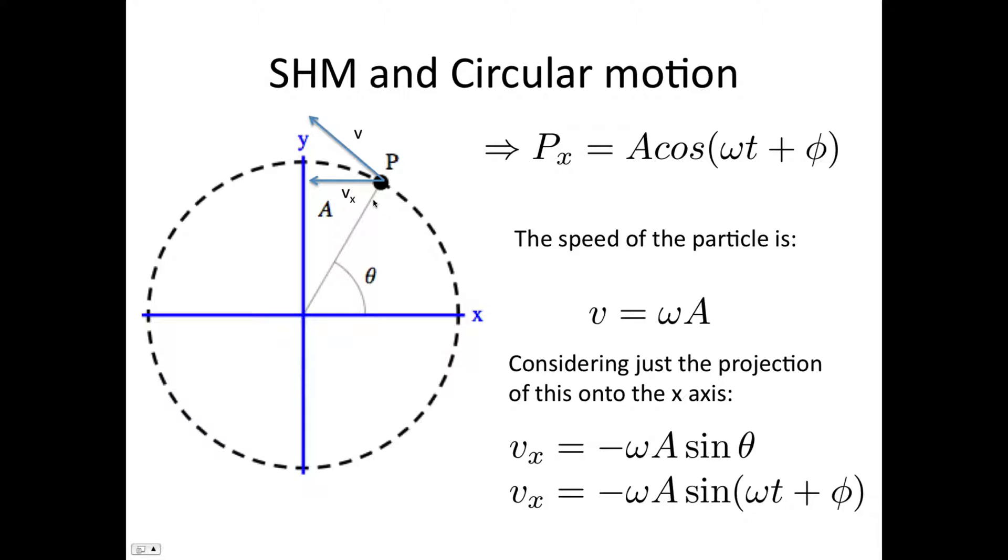Now we're just interested in the x component of this speed. You can see it's back towards the equilibrium position, so it's in the opposite direction to the position. Hence, we've got a negative sign. So the speed, here's the angle theta. This angle here is theta. This angle is 90 minus theta. So the speed is given by v sine theta, which is equal to minus omega A sine theta.